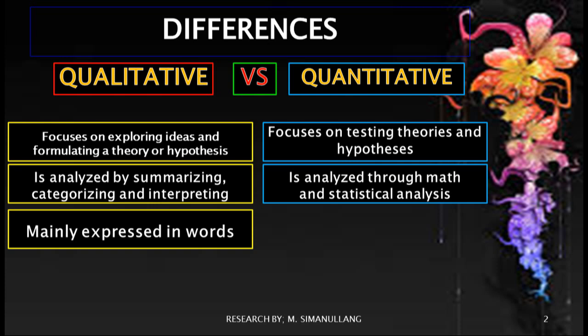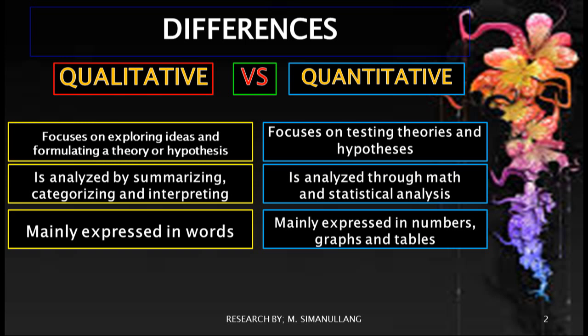Therefore, in qualitative research the research results or conclusion is mainly expressed in words, while for quantitative research the research results are mainly expressed in numbers, graphs, and tables.